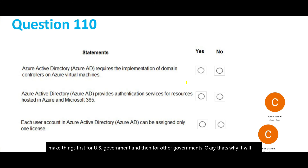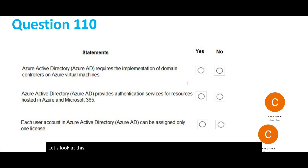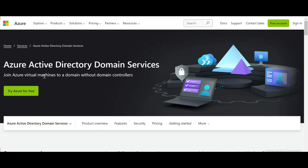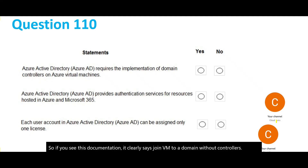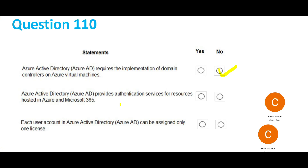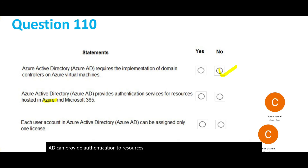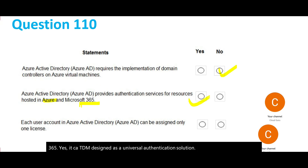The last question has three sub-questions about Azure AD. First: does AD require implementation of domain controllers on Azure virtual machines? No — documentation clearly states you can join VMs to a domain without domain controllers. Second: can AD provide authentication to Azure resources like VMs, Azure SQL Server, and Microsoft 365? Yes — AD is designed as a universal authentication solution for all Microsoft products. Third: can each user account in AD be assigned only one license? No — that is not the norm.